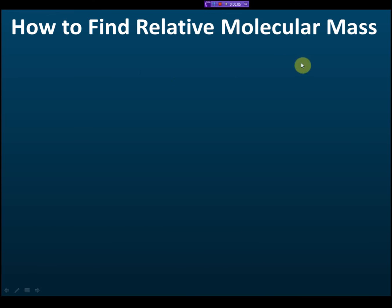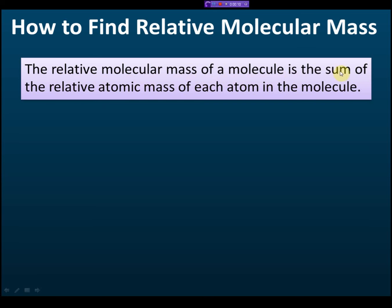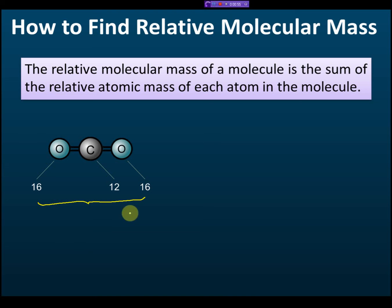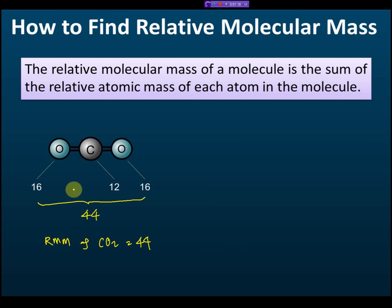To find the relative molecular mass, we sum the relative atomic masses of each atom in the molecule. For example, carbon dioxide has one carbon atom and two oxygen atoms. The relative atomic mass of carbon is 12, and oxygen is 16. With two oxygens, the total mass is 12 plus 32 equals 44. So the relative molecular mass of carbon dioxide is 44.